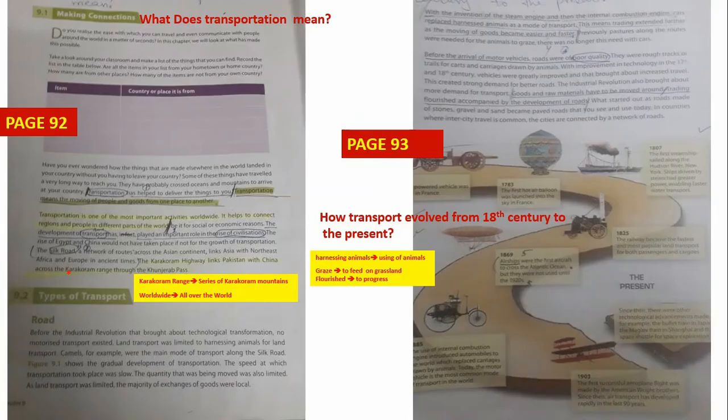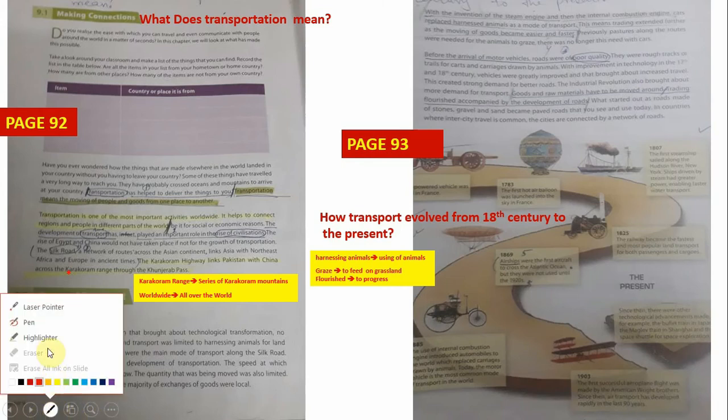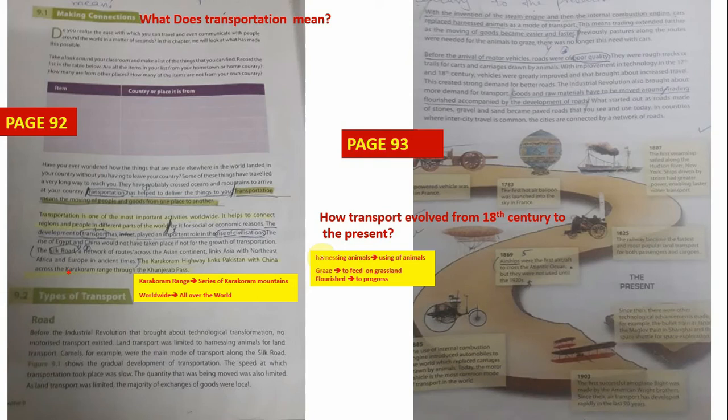Students, now I'm going to end up my lecture. I hope you are getting all the lecture. It seems to be a little bit tough but we have to go through all these procedures because we have to stay at home and save our lives. Now there is a question for this topic, question number two of this chapter: how transport evolved from 18th century to the present? You have to write its answer in the form of this timeline which is given in the form of a diagram.